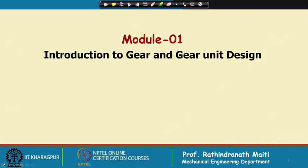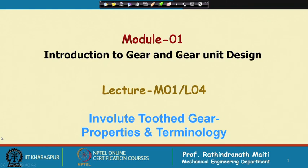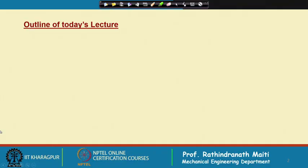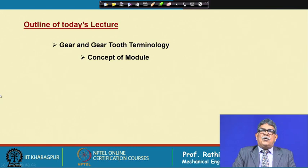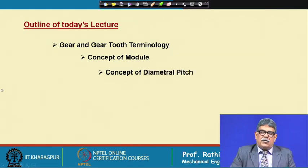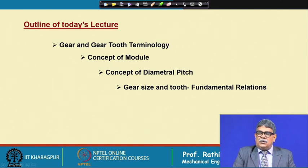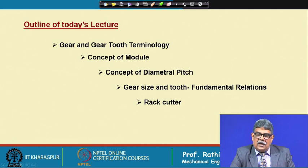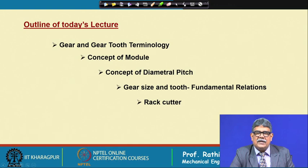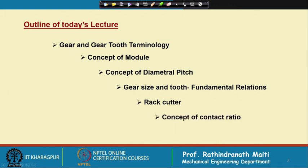In this first module introduction to gear and gear unit design, my next lecture is on involute tooth gear properties and terminology. In this lecture I shall cover gear and gear tooth terminology, concept of module, concept of diametral pitch, gear size and tooth fundamental relations. I shall discuss a little bit about the rack cutter, which is the basic cutter for generating the involute gear teeth. Finally, we will have the concept of contact ratio.